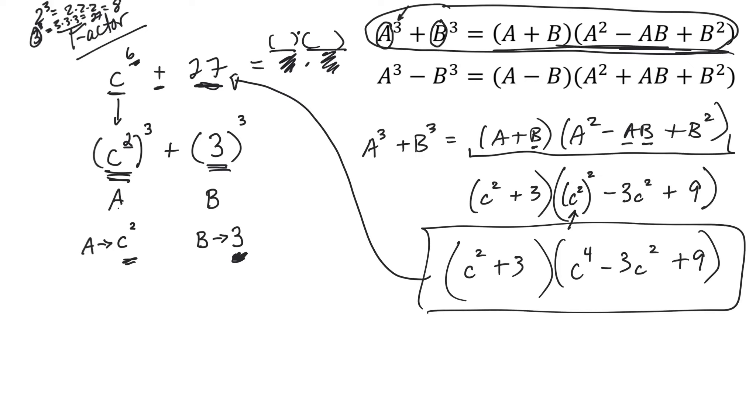Okay, so it's just sort of following a pattern, and you've got to make sure you can identify that that's 3 cubed, and this is C squared cubed. Hopefully that helps.